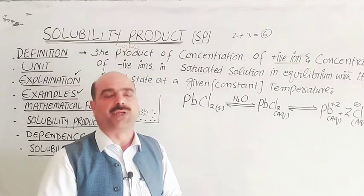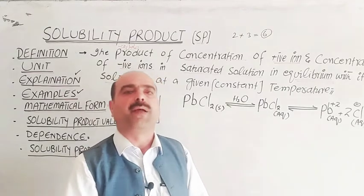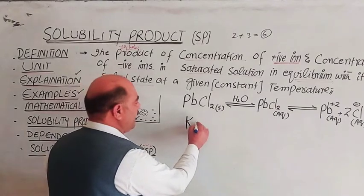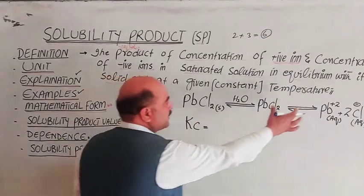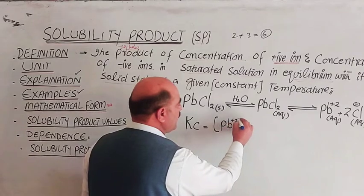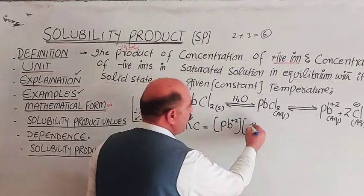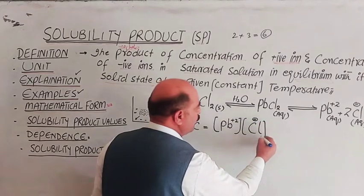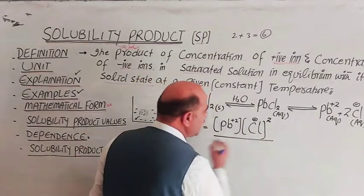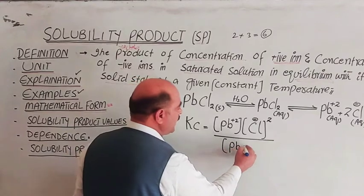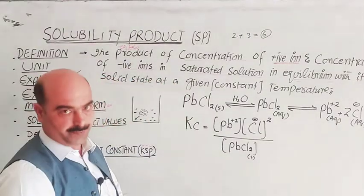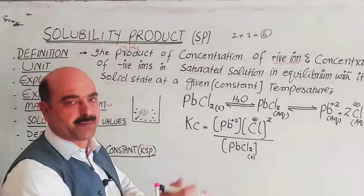Eventually an equilibrium state is reached between ionization and precipitation. The ions in solution are in equilibrium with the remaining solid lead chloride. At equilibrium, the rate of ionization equals the rate of precipitation. This is an important point: since the salt is less soluble, it ionizes very little. Therefore, the initial concentration of lead chloride is approximately equal to its equilibrium concentration.